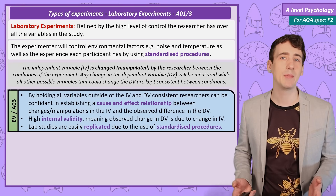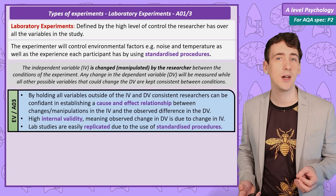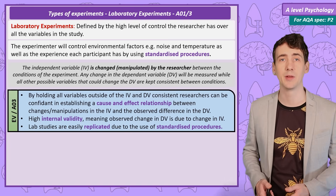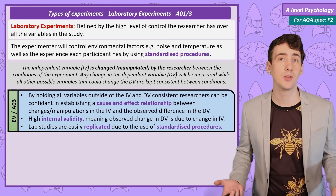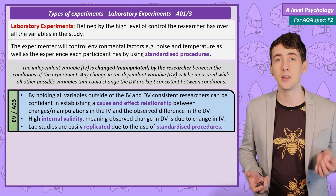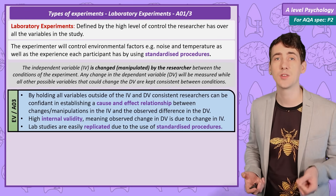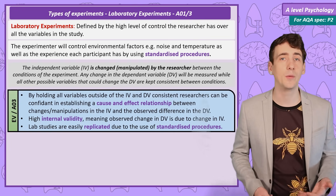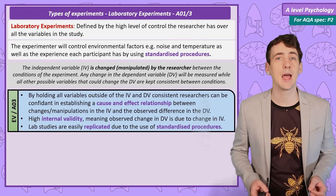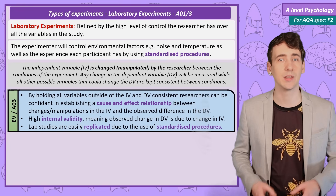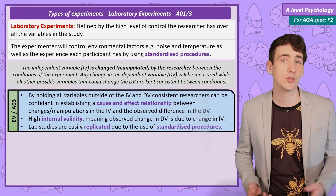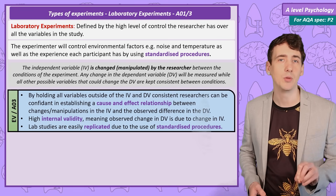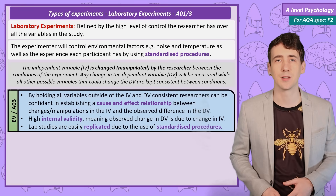An advantage of using a lab experiment is that by controlling for all other variables, you can be fairly confident in suggesting a cause and effect relationship. Because you kept everything else constant, the variation you made to the independent variable caused the change measured in the dependent variable. This high control means we argue that lab experiments have high internal validity — what was measured is true, and the observed effect is due to the change in the independent variable, not some other uncontrolled factor.